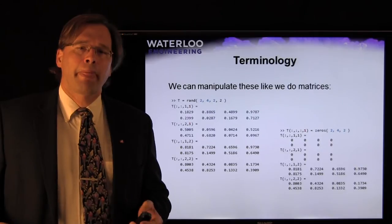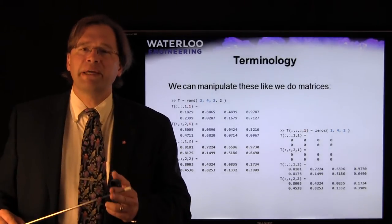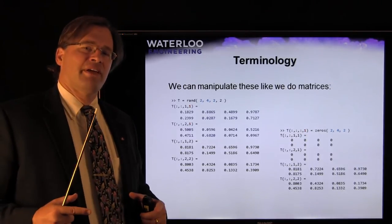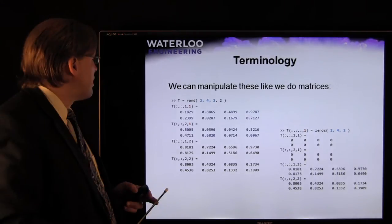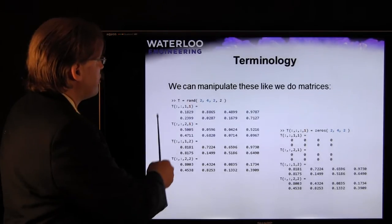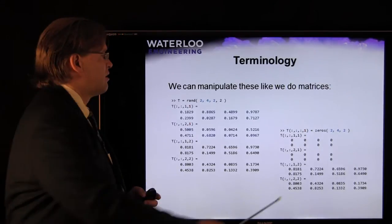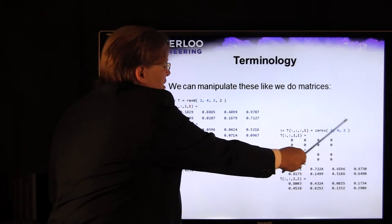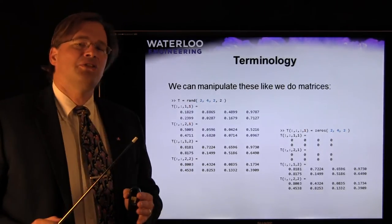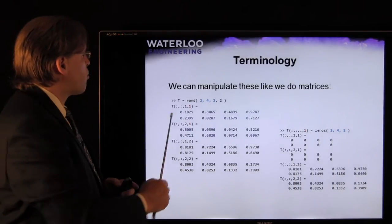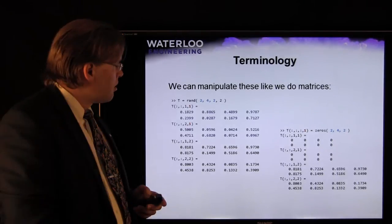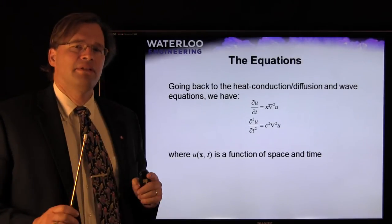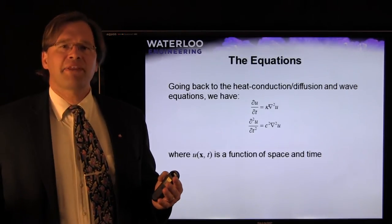Just like with a matrix, we can do other manipulations. With a matrix you could assign an entire column to a set of values, or assign a sub-matrix to a set of values. We can do the same here: we take that random matrix and assign all entries with last index equal to 1 to be zeros. This three-dimensional array of zeros perfectly fits into that three-dimensional slice of the four-dimensional array, and consequently all those entries get assigned to zero. That's the relationship between arrays, matrices, and mathematical objects in MATLAB.